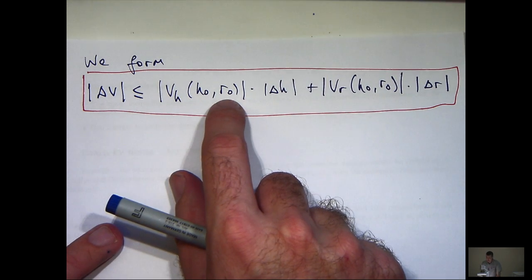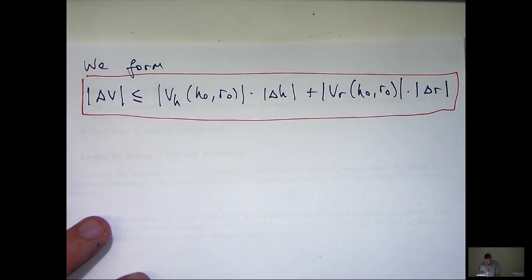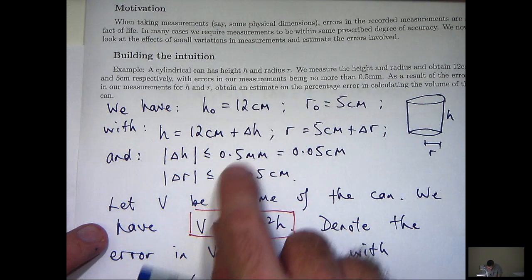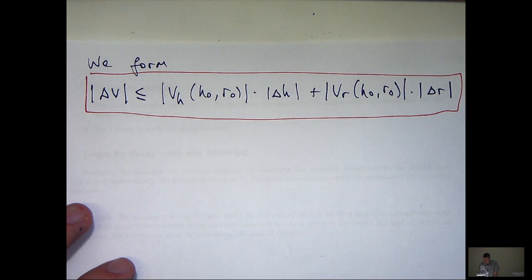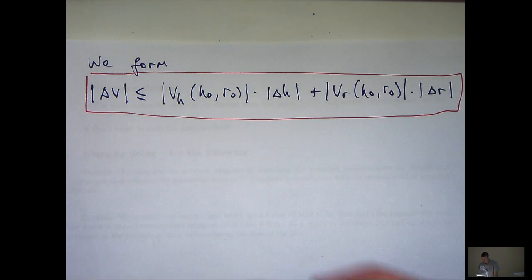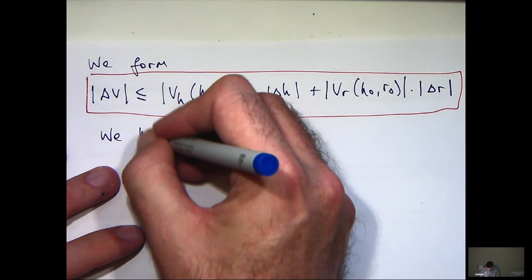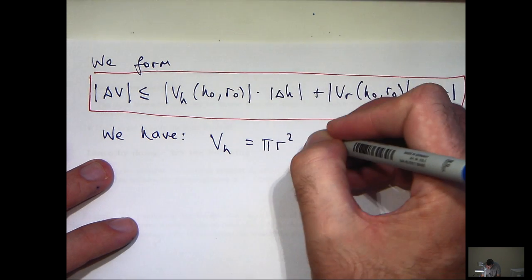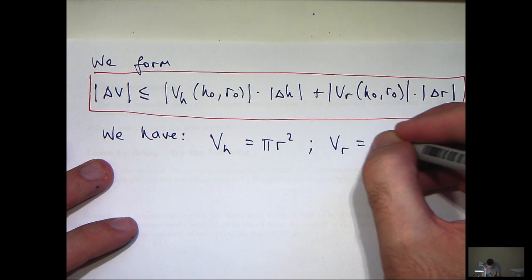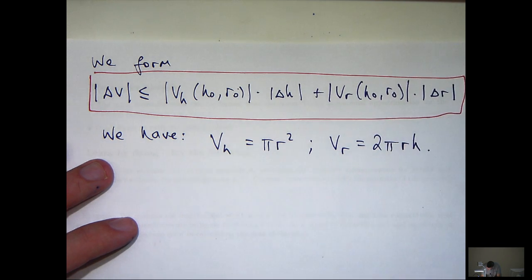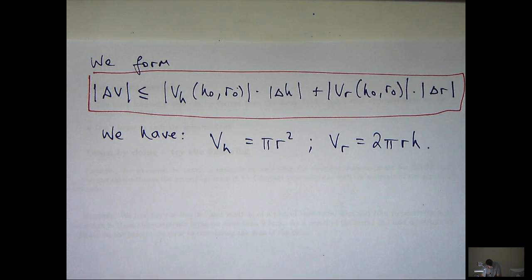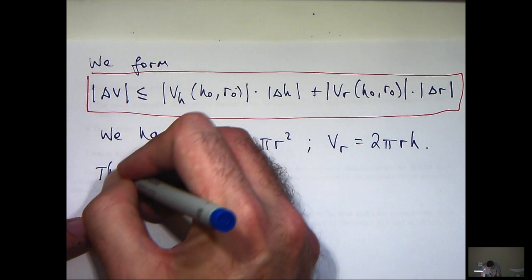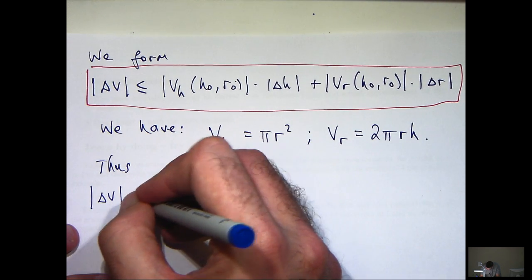So let's calculate these partial derivatives, evaluate them at h₀ and r₀. Remember, h₀ is 12, r₀ is 5. And we have an estimate on these guys of 0.05 cm here and here. So we can all use that to our advantage. Let's calculate these partial derivatives. Vₕ, we're going to have the following.